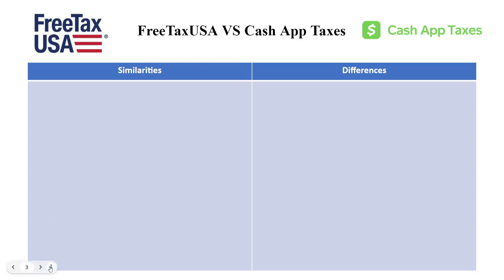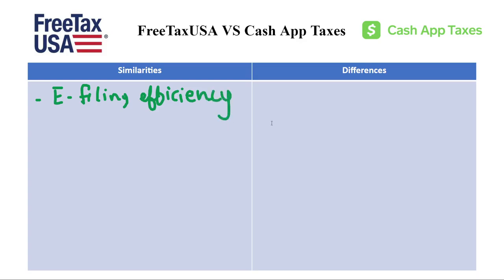The first similarity is e-filing efficiency. Both platforms prioritize swift and secure tax filing through electronic submissions. This ensures your tax return reaches the IRS quickly and minimizes errors compared to paper filing. You can also expect a faster turnaround time for your refund.